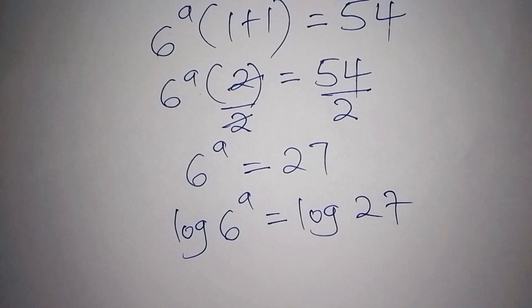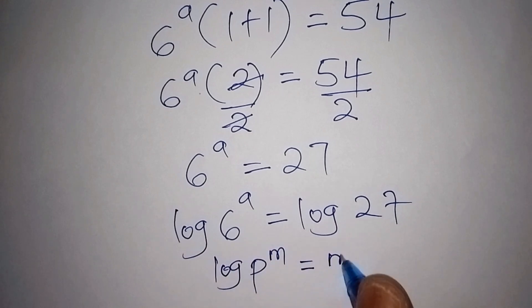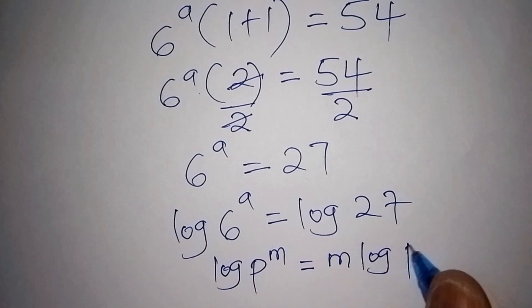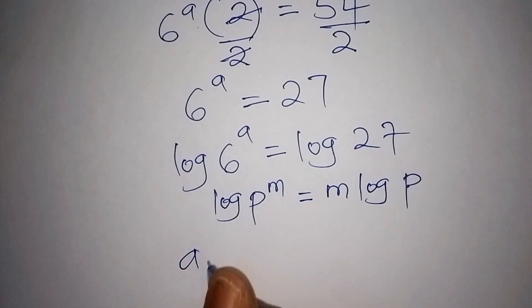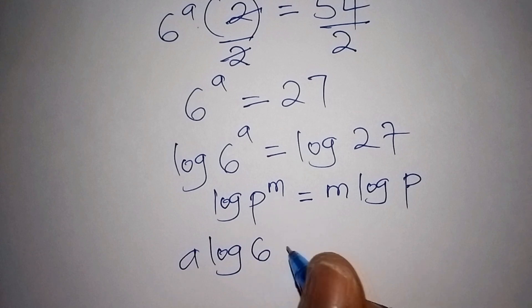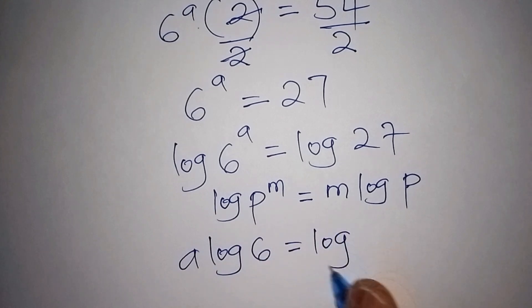So we have the log of p to the power of m. This one can also be written as m log p. So the log of 6 to the power of a, we can now rewrite it by saying a log 6 equals the log of 27.